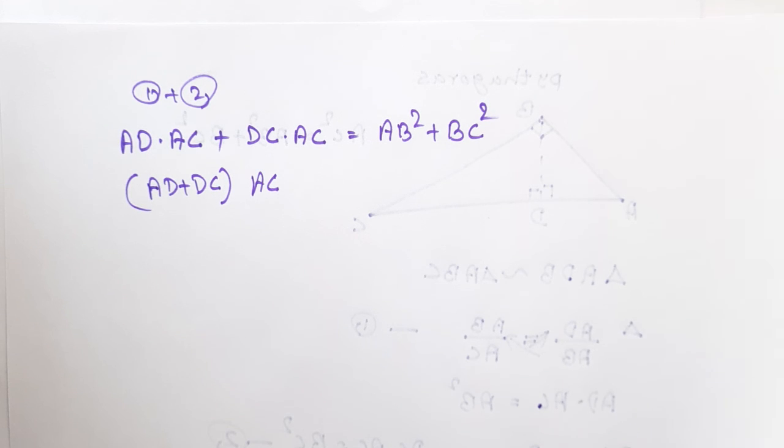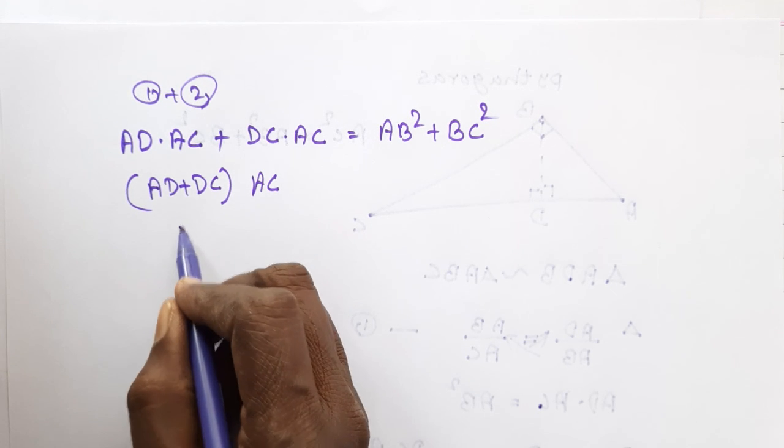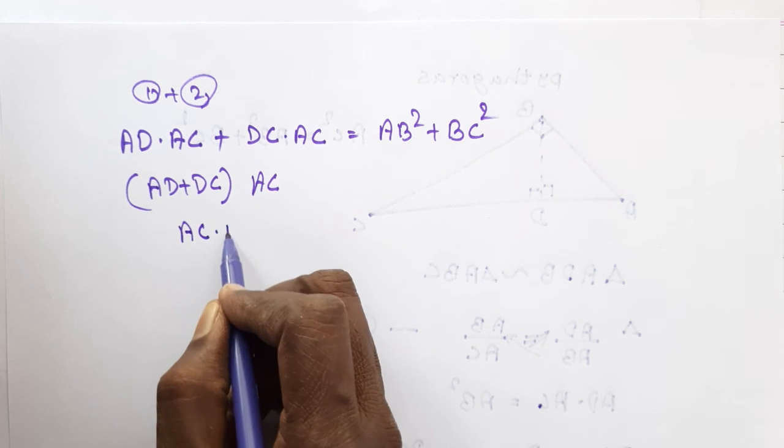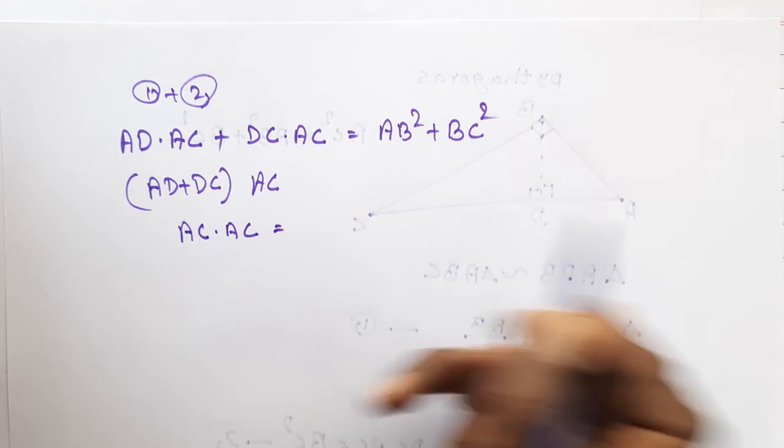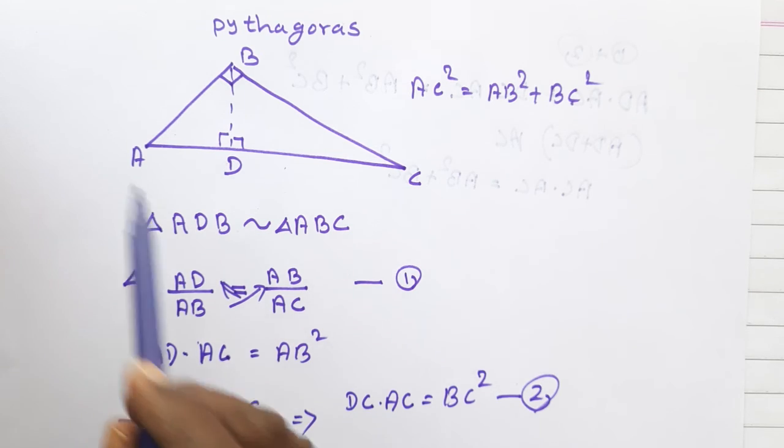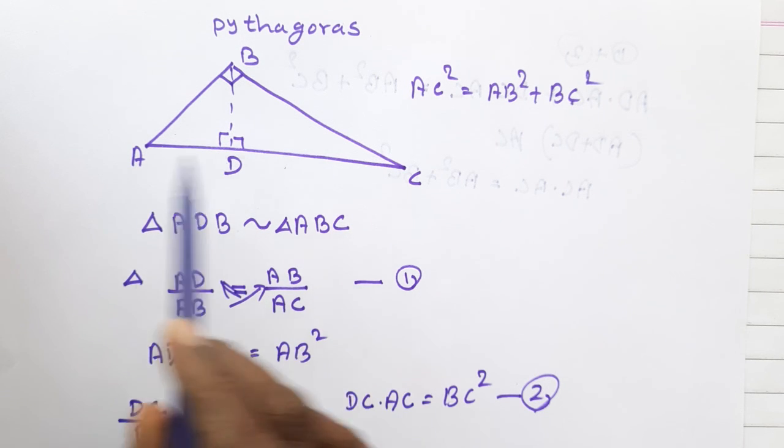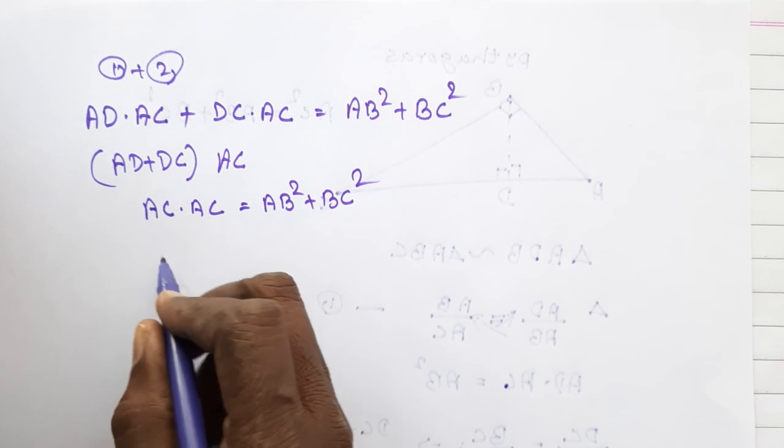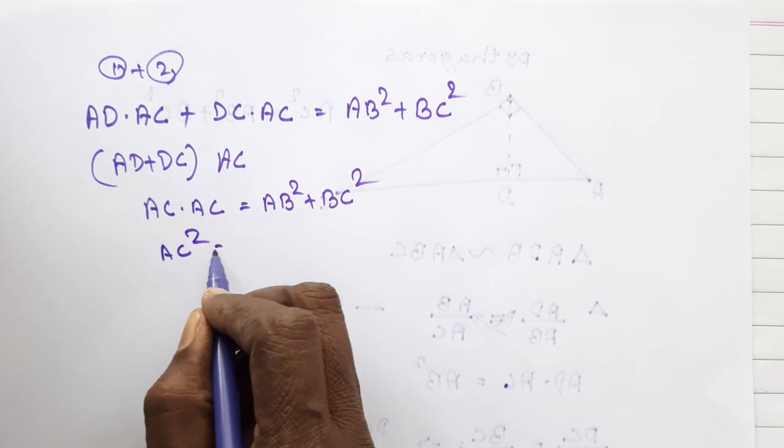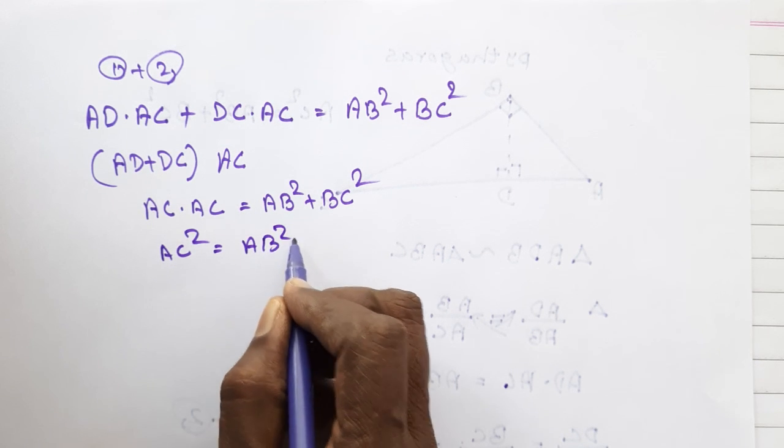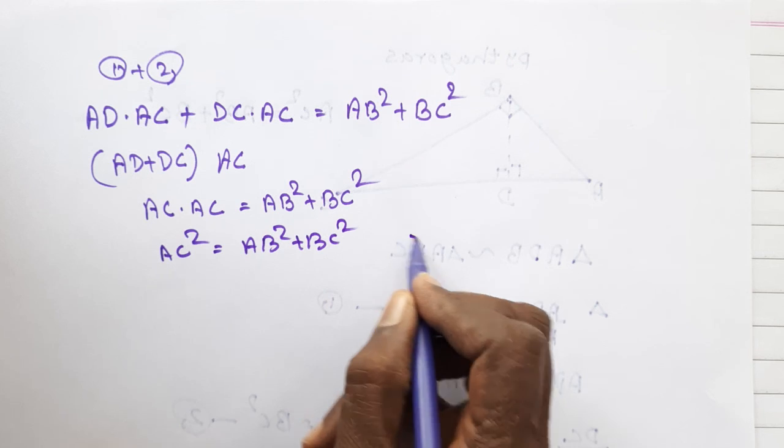AD plus DC means AC dot AC. AD plus DC is equal to AC. So AC square is equal to AB square plus BC square is proved.